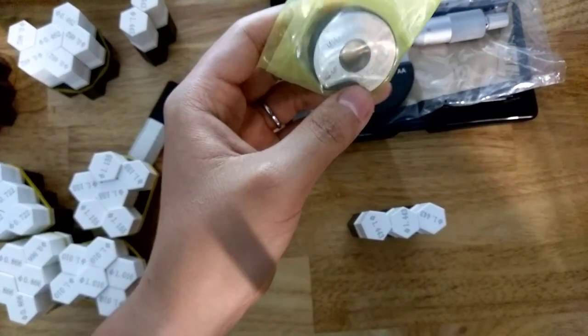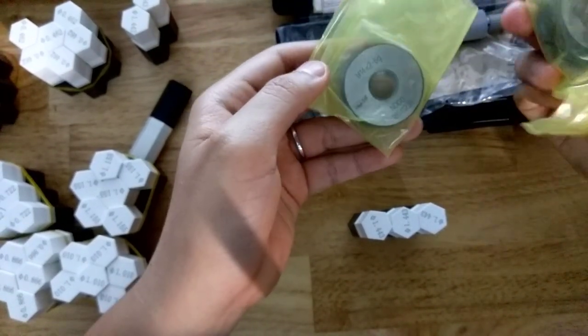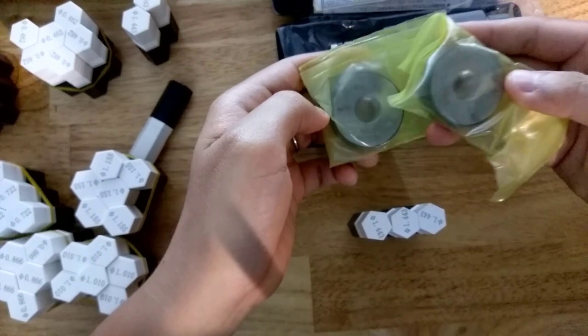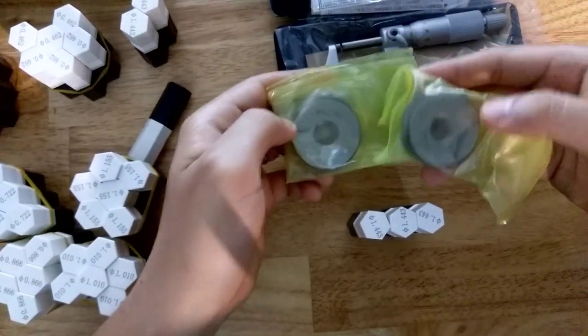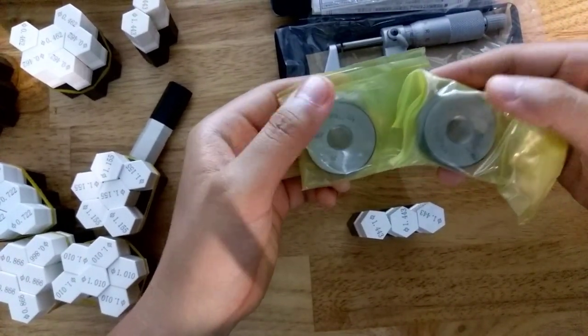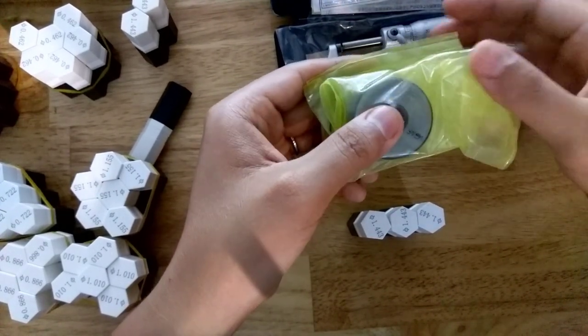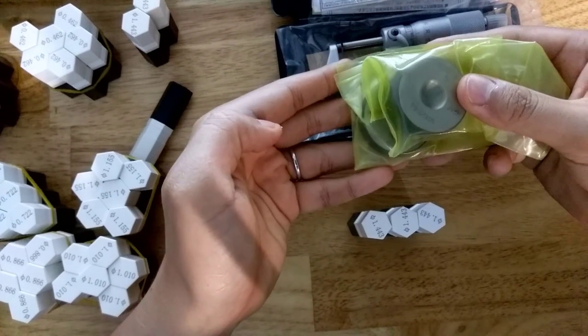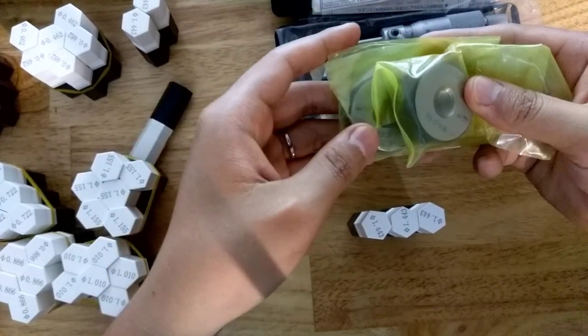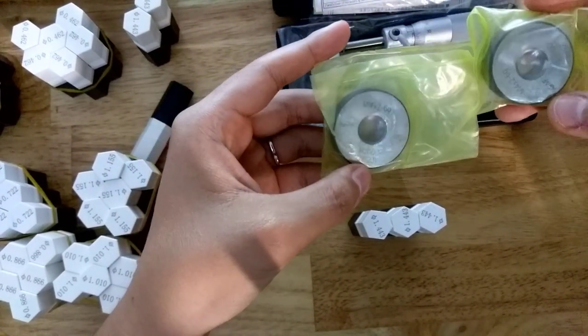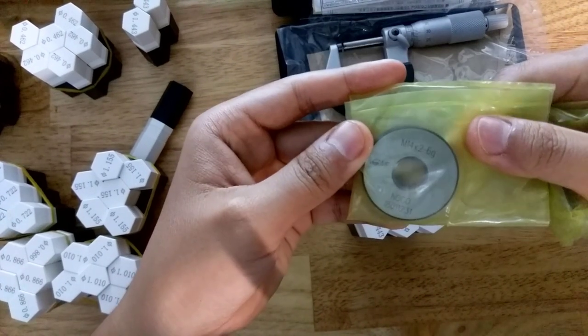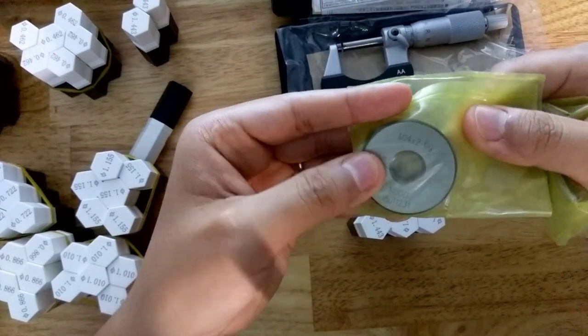Normally when you want to check an external thread, you can use the thread ring gauge. But you know, this kind of gauge is very expensive and you can only check one side of thread using one gauge. So you need to put a lot of money to get all of the gauges if you work with many kinds of threads.